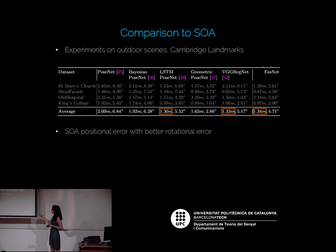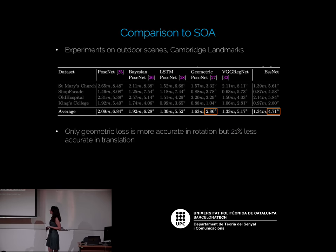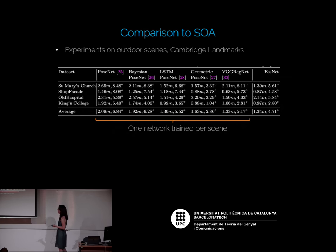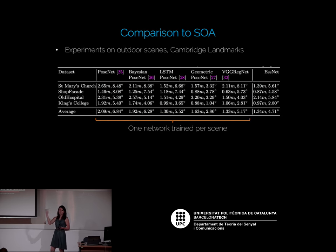Comparing to other methods on Cambridge Landmarks, our essential matrix prediction approach achieves positional error close to state-of-the-art and is better in rotational error in some cases. We don't fully match the geometric loss in rotational error, since it uses strong 3D information, but we are more accurate in position. Most importantly, all other methods use one network per scene — four separate networks for four scenes — while we use a single network that can localize anywhere.